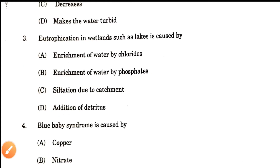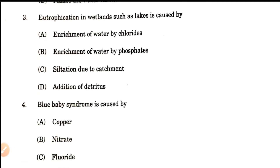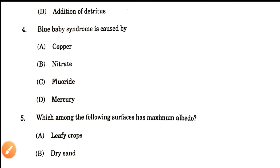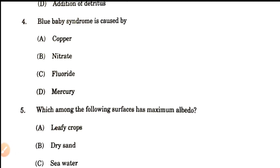Question number 3: Eutrophication in wetlands such as lakes is caused by enrichment of water by chlorides, enrichment by phosphates, siltation due to catchment, or addition of detritus? Eutrophication in a lake is caused by over-enrichment with nutrients, and the principal nutrient is phosphorus. So option B is correct — enrichment of water by phosphates.